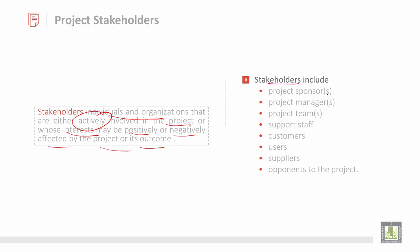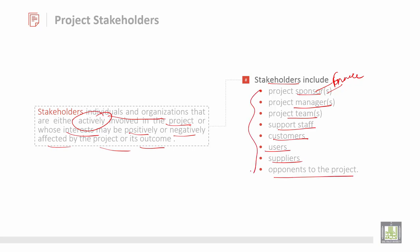Who are these project stakeholders? They include project sponsors who provide money and finance, then managers, then the project team, then support staff, customers, users, suppliers, and opponents of the project. So these are very important persons who are part of the project.